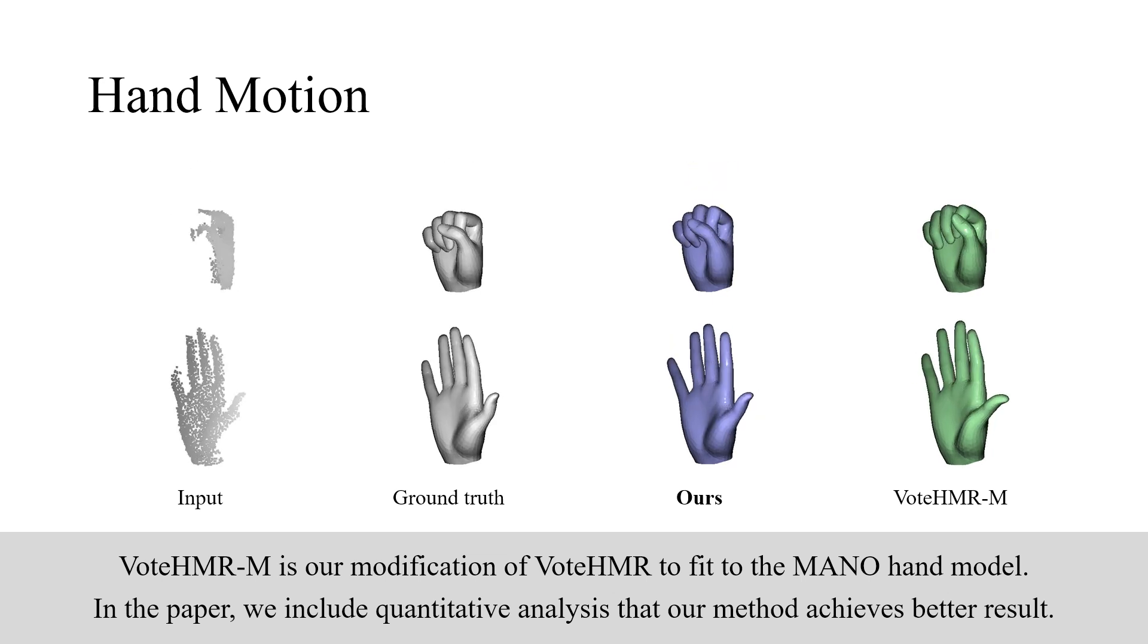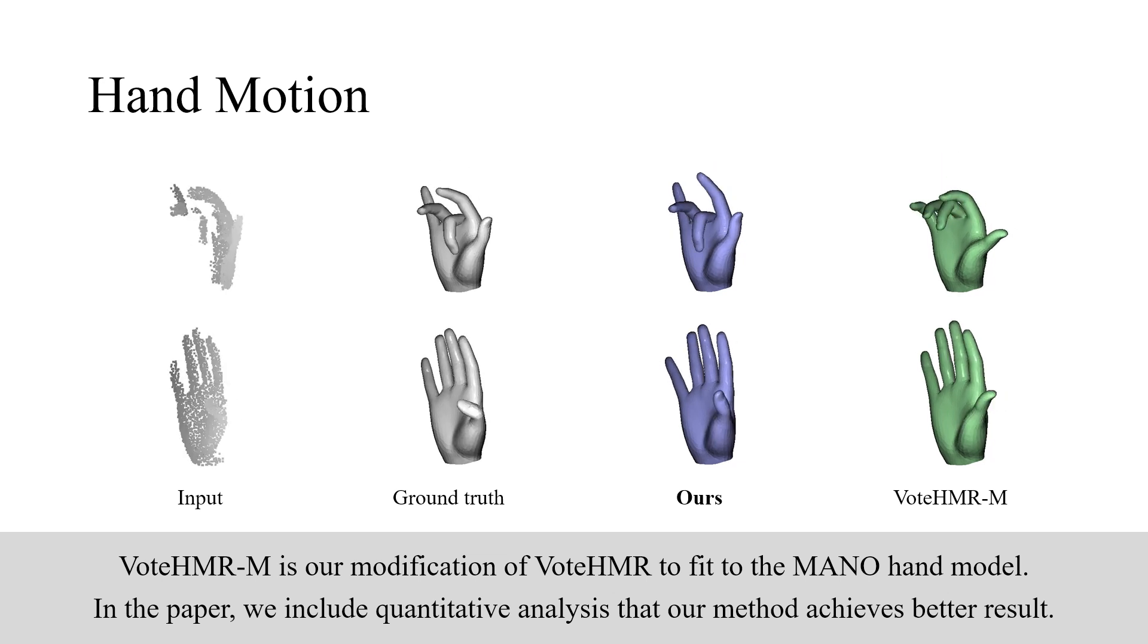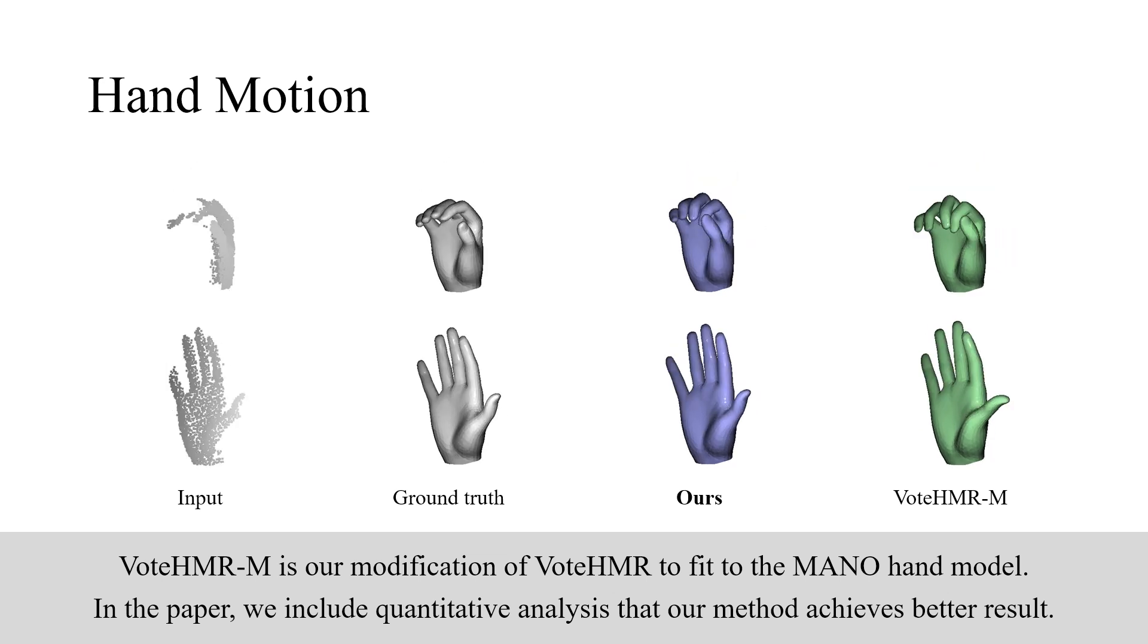VoightHMR+M is our modification of VoightHMR to fit the MANO hand model. In the paper, we include quantitative analysis that our method achieves better results.